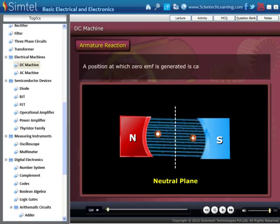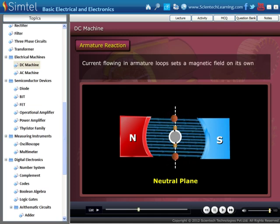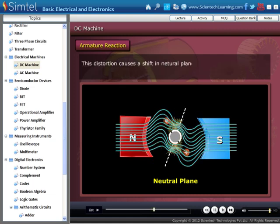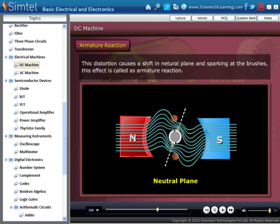Here we study about armature reaction. An important problem in the design of DC machine is prevention of sparking. A position at which zero EMF is generated is called the neutral plane. Current flowing in the armature loops sets a magnetic field on its own. This field interacts with the main magnetic field and distorts it. This distortion causes a shift in neutral plane and sparking at the brushes. This effect is called armature reaction.